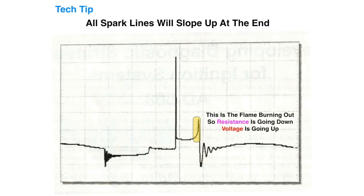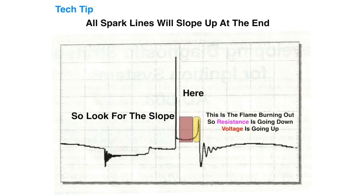A tech tip: all spark lines will slope up at the very end — this is the flame burning out, so resistance is going down and voltage is going up. So look for the slope in the first red portion of the slope line, because all of them will go up at the very tail of the spark line. Look for it in the middle of the slope, because the tail part will always be sloped up on all.